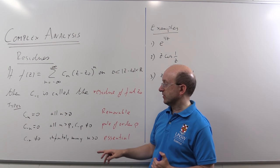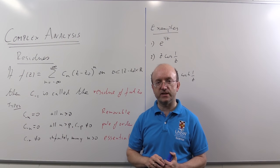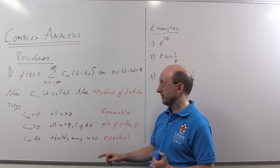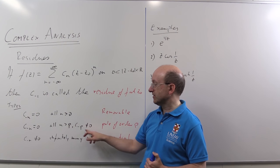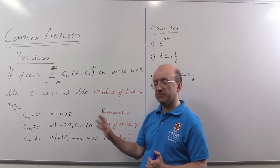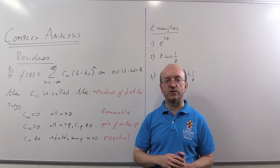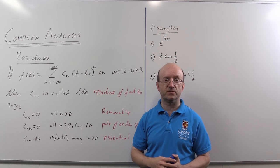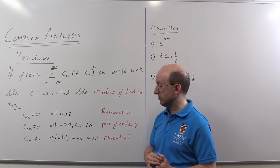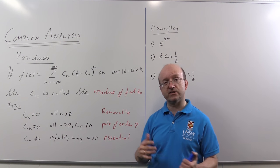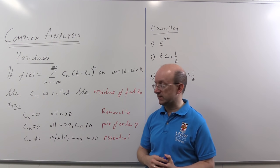The second case is where finitely many of the negative powers are nonzero. C_{-p} is not zero but every power below that is zero. And that's a pole of order p which we looked at in the video on zeros and poles. And I'll discuss how to find the residues of those in the next video.